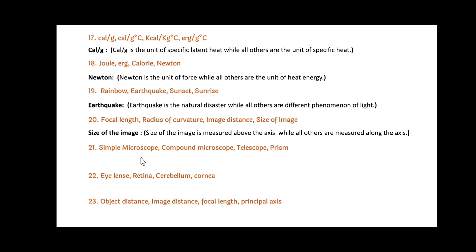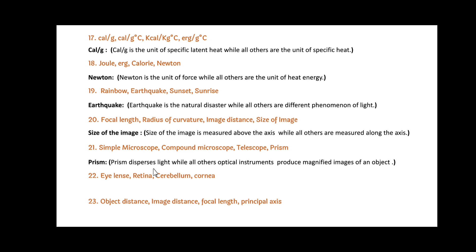Next: Simple Microscope, Compound Microscope, Telescope and Prism. Friends, here Prism is the odd one out. Since Prism disperses light, while all others — Simple Microscope, Compound Microscope and Telescope — are optical instruments that produce a magnified image of an object.